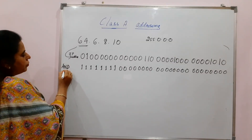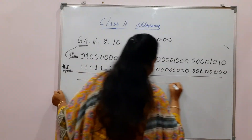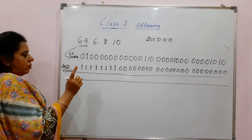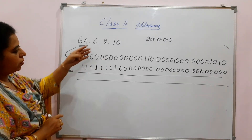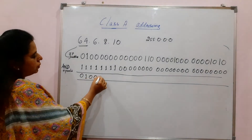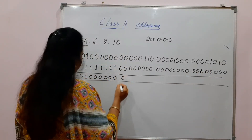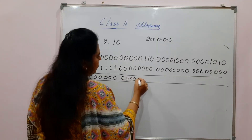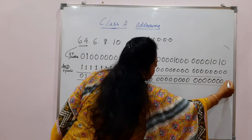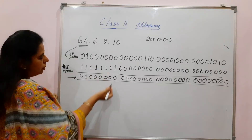Performing the logical AND operation: 1 ANDed with 1 is always 1; otherwise, 0 ANDed with 1 or 1 ANDed with 0 is 0. So for the first 8 bits, you get 01000000. For the remaining 24 bits of the subnet mask, which are all zeros, the bitwise AND operation results in all 0s. This is the resulting answer, which you then convert into dotted decimal notation.